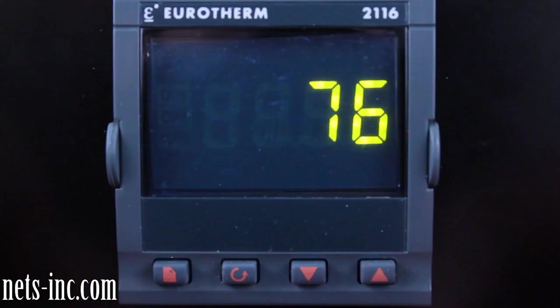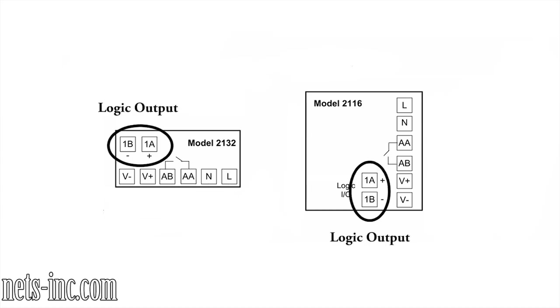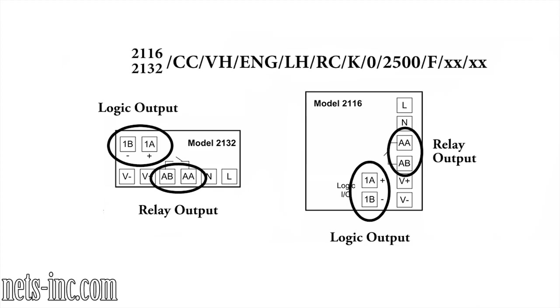This video tutorial will demonstrate the basic operations level setup of a Eurotherm 2132 or 2116 controller. The 2132 or 2116 controller is a fixed hardware configuration instrument, which means it comes standard with a logic output on terminals 1A and 1B and a relay output on terminals AA and AB. For this demonstration, the controller is set up as a heat/cool controller, with the logic output as the heating output and the relay output as the cooling output. The process input will be a Type K thermocouple set up in degrees Fahrenheit.